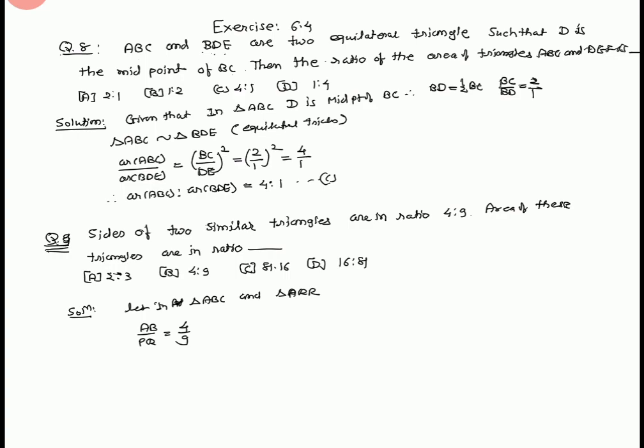Now we have to find the ratio of the area of two triangles. The area of triangle ABC upon area of triangle PQR equals AB upon PQ whole square, equals 4 upon 9 whole square. Area of ABC upon area of PQR equals 16 upon 81.